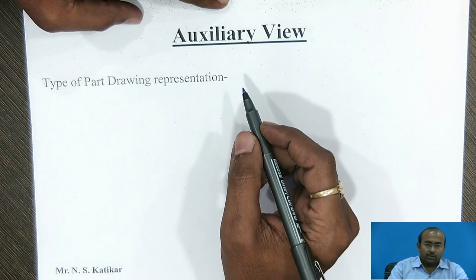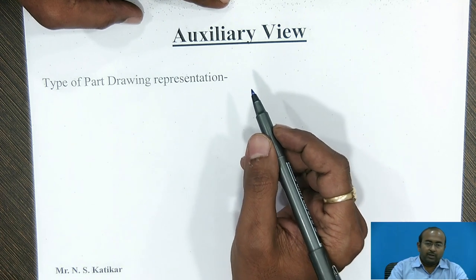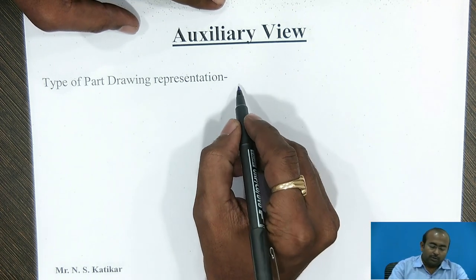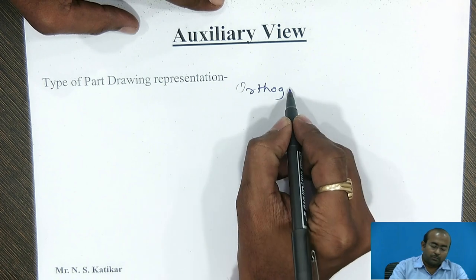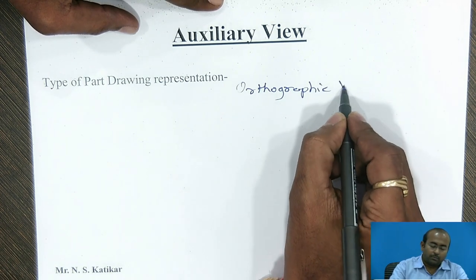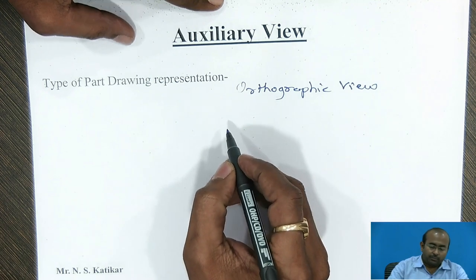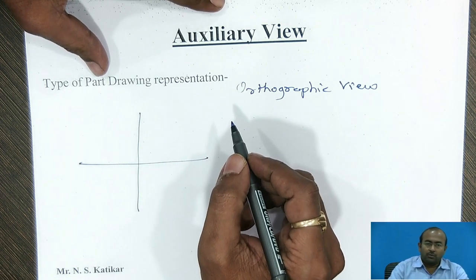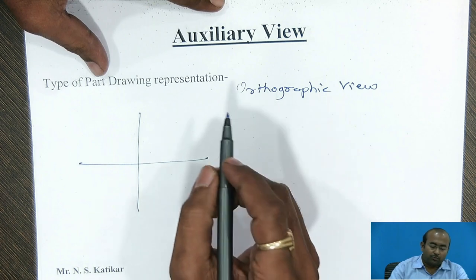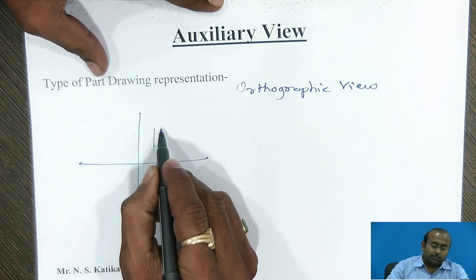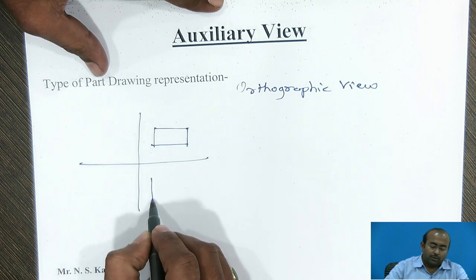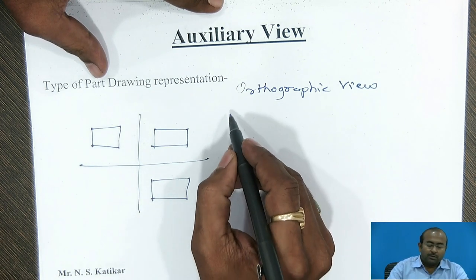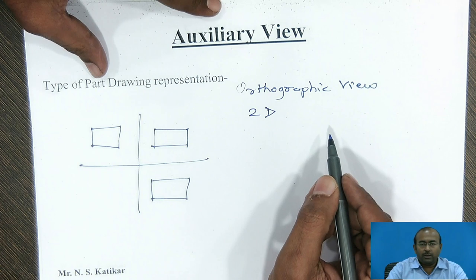Before proceeding with the auxiliary view, let us see what are the types of part drawing representation methods. In first year engineering graphics, you might have learned about the orthographic views, where particularly the first angle and third angle, four quadrant method is used to represent the part geometry in different numbers of views — for example, the front view, top view, and side view. This is the two-dimensional method for representation of any part geometry.